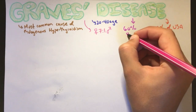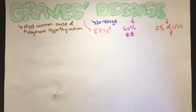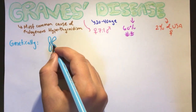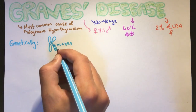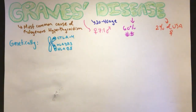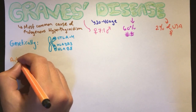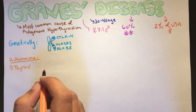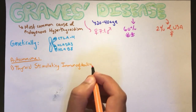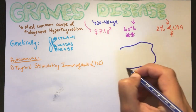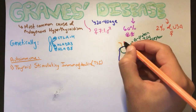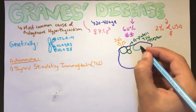Graves disease has a strong genetic susceptibility, with a 60% concordance rate between twins. Genetically it is associated with HLA-DR3 and HLA-B8, markers the body uses to identify itself, and with CTLA-4, which encodes for an inhibitory T-cell receptor. A mutation in these genes leads to over-activation of T-cells. Graves disease is an autoimmune disease with antibodies to TSH receptors, including thyroid stimulating immunoglobulin, an IgG antibody that binds to the TSH receptor, mimics TSH, activates adenylate cyclase, and increases cyclic AMP, leading to increased thyroid hormones.